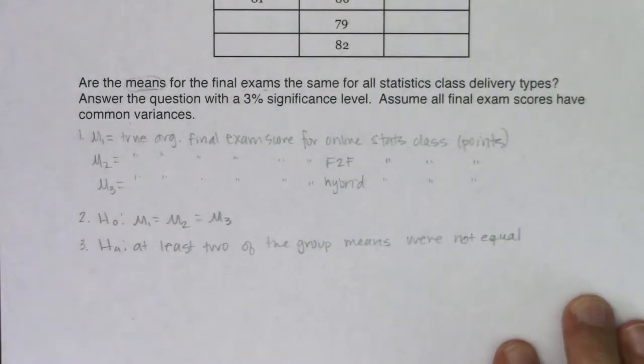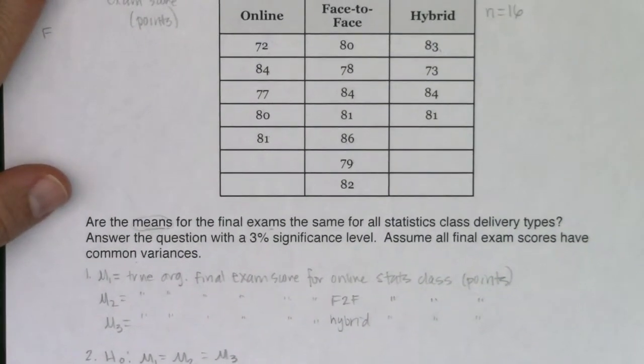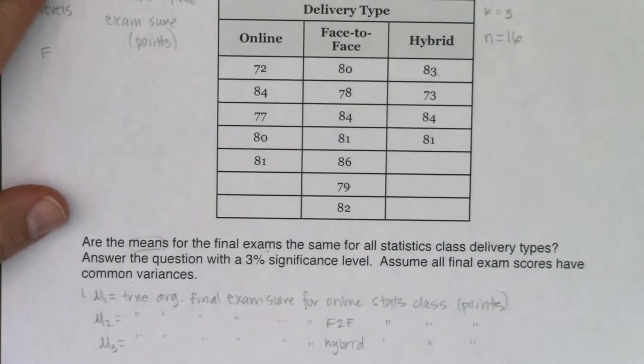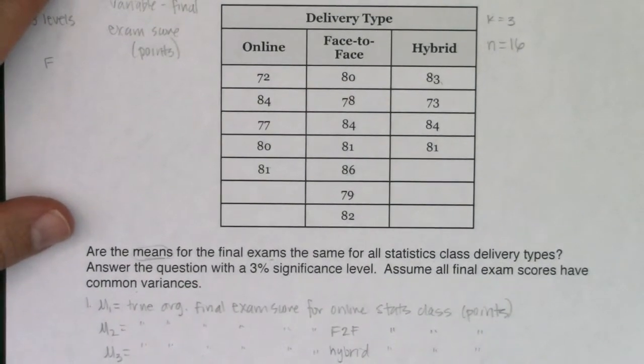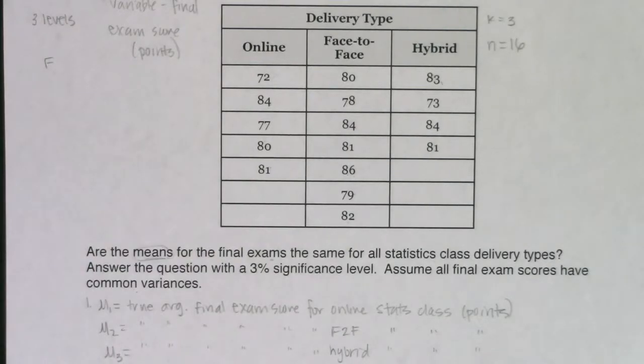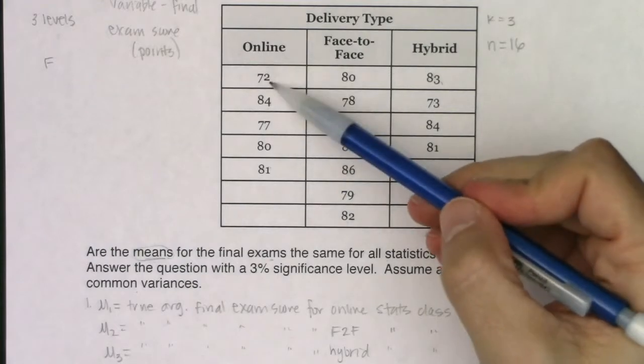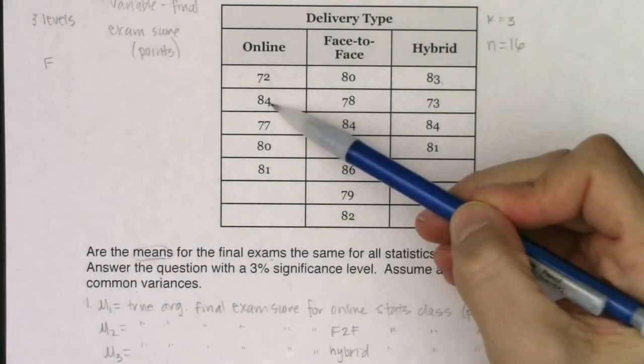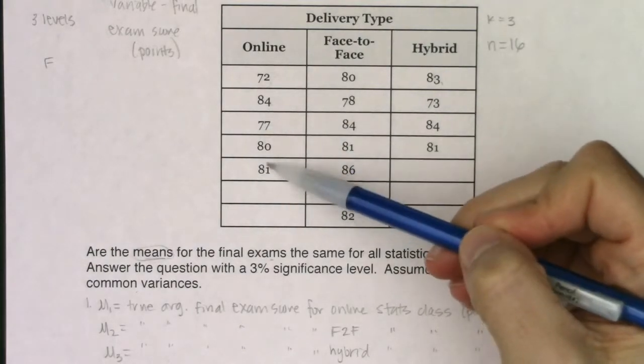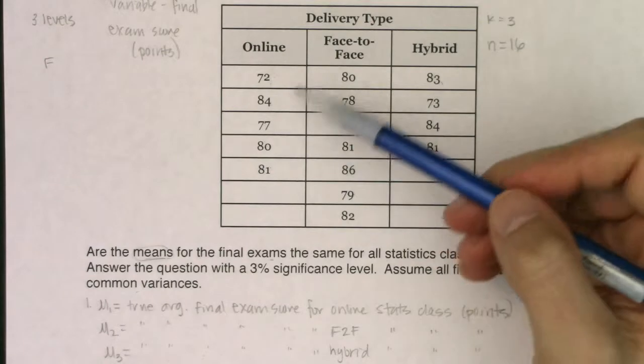And we're trying to figure out is any one delivery method better than the other. And before we get going on that, well, let me define the null. And then let's get some gut feelings. So the null is that all delivery types are created equal. Equality always happens in the null. No one method, no one delivery type is better than the other. So for the alternate, it would be at least two of the group means we're not equal.